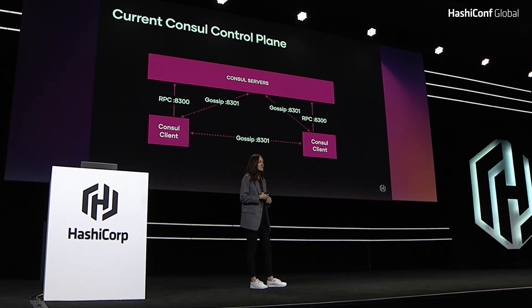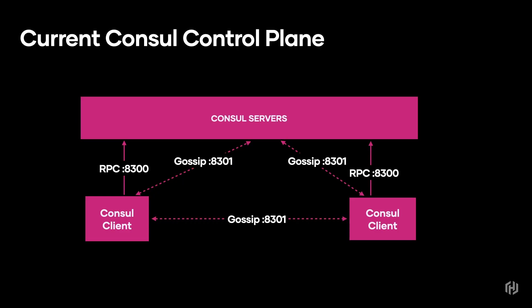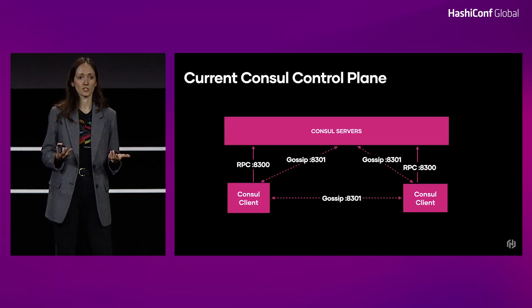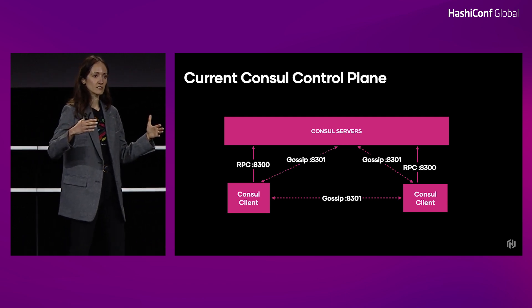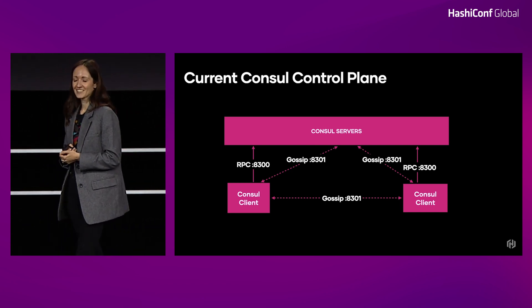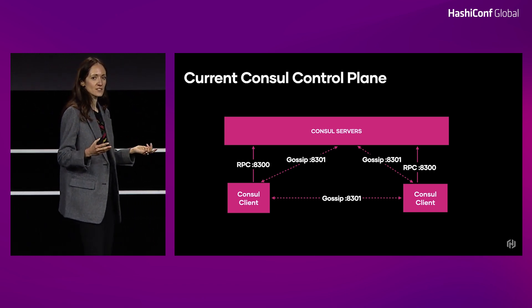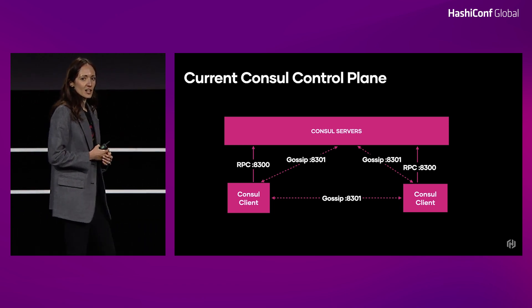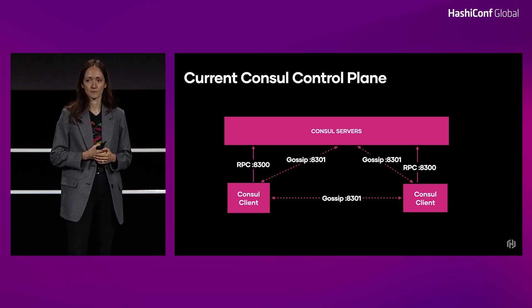Aside from that, Consul clients and Consul servers all participate in a gossip protocol, and they need to form one common gossip pool. For those who don't know, gossip protocols are a family of protocols used in distributed computing for disseminating information very quickly within the cluster to all members. You can think of it kind of like how office rumors spread — if three co-workers start a rumor, the next day the whole office will know. That's what Consul clients and servers use to know important information about the cluster.